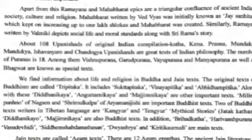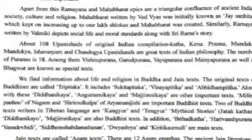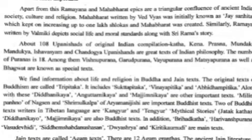Apart from this, the Ramayana and Mahabharata epics are a triangular confluence of ancient Indian society, culture, and religion. The Mahabharata, written by Vyasa, was initially known as Jaisanitha and grew to one lakh shlokas. Similarly, Ramayana, written by Valmiki, depicts social life and moral standards along with Sri Rama's story.